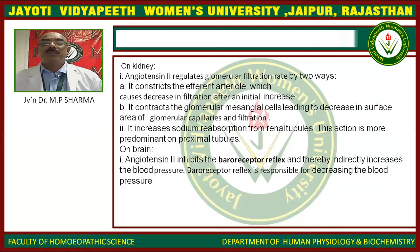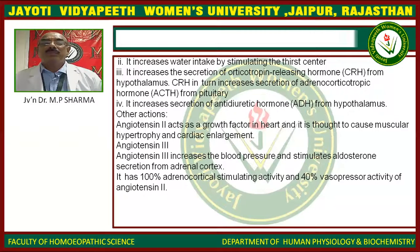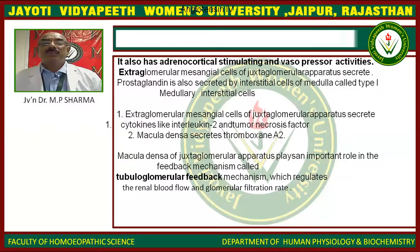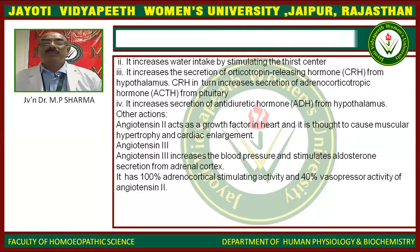Angiotensin-2 inhibits baroreceptor reflexes and thereby indirectly increases blood pressure, since baroreceptor reflexes are responsible for decreasing blood pressure. It increases water intake by stimulating the thirst center. It increases the secretion of corticotropin-releasing hormone (CRH) from the hypothalamus, which in turn increases secretion of adrenocorticotropic hormone (ACTH) from the pituitary, and also increases secretion of antidiuretic hormone from the hypothalamus. Additionally, angiotensin-2 acts as a growth factor in the heart, causing myocardial hypertrophy and cardiac enlargement.